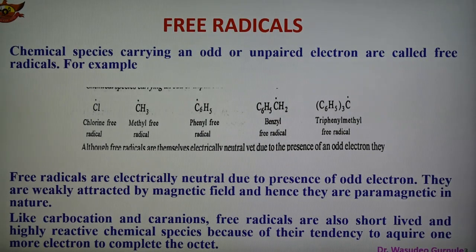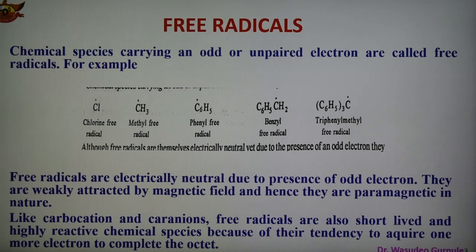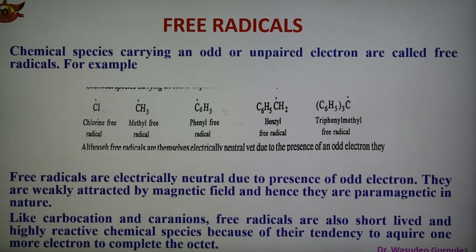Free Radicals are chemical species with an odd, unshared, or unpaired electron. Electrically they are neutral — they have no charge — and they possess an odd electron. They are weakly attracted by a magnetic field and therefore are paramagnetic in nature. Free Radicals are also short-lived and highly reactive chemical species, because of their tendency to acquire one more electron to complete the octet. This Free Radical is also sometimes known as an electrophile because it is one electron short to complete the octet, and it can also act as a nucleophile.